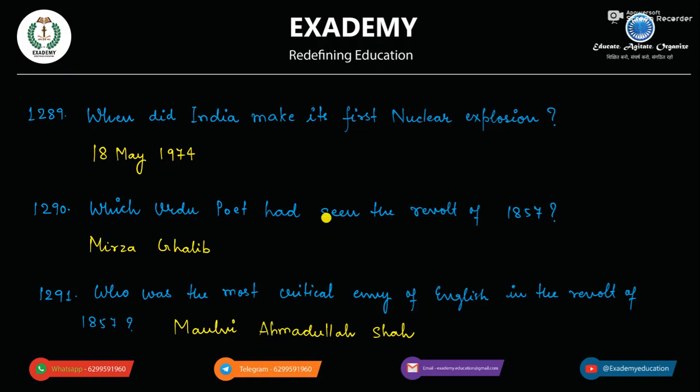When did India make its first nuclear explosion? India ne pehla nuclear explosion kab kiya tha? 18th May 1974.